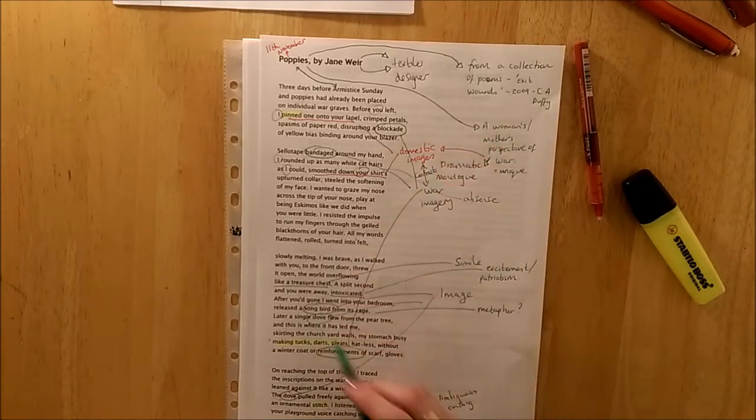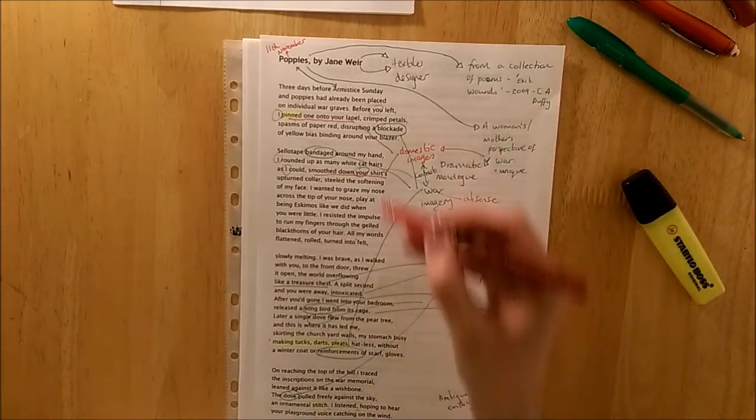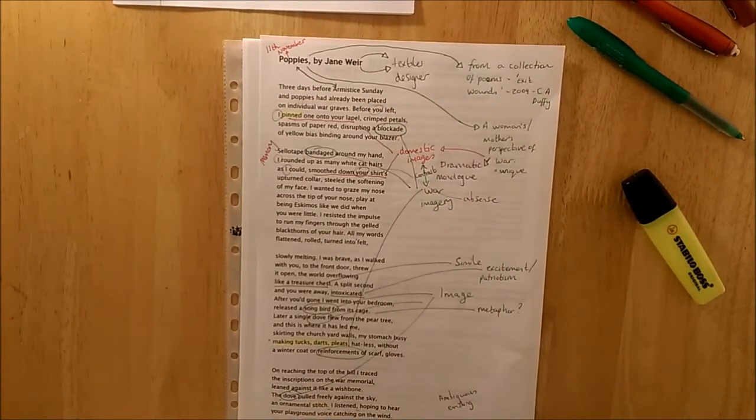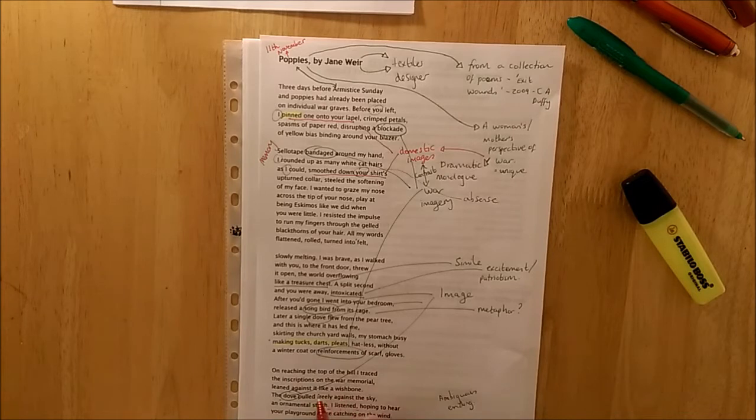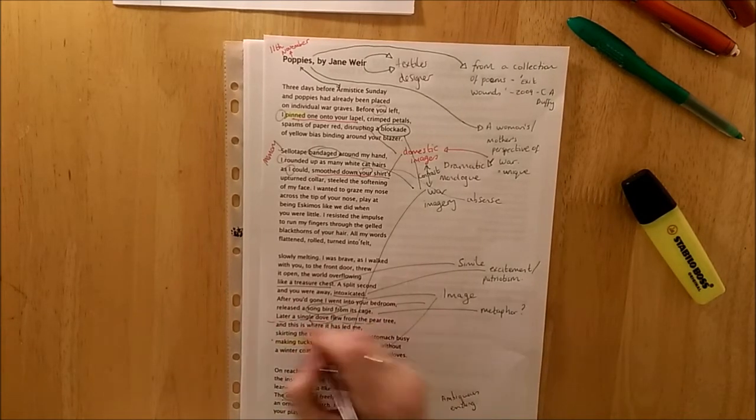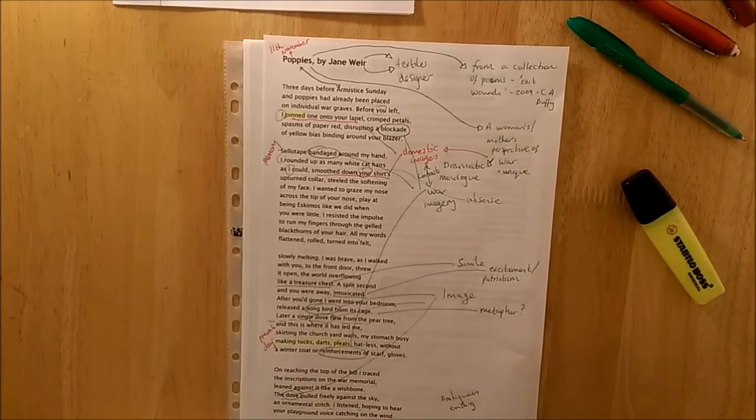Then if I think about the structure of the poem. There's definitely a change. So here we have a memory. She's remembering when her son left the house. And then later as well. You've got here. Where it's led her. In the church. By the memorial. So I would say here we come into the present day. We're with our speaker in the present.